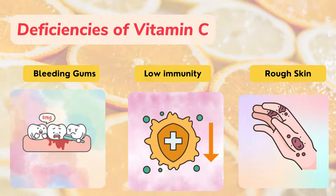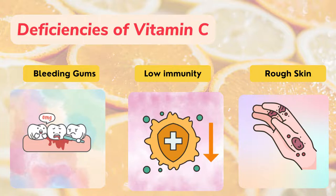Now, what are the deficiencies of vitamin C? The deficiency of vitamin C is basically scurvy. It is a condition which leads to a lot of symptoms like low immunity, bleeding gums, rough skin, fatigue, and tiredness. Scurvy is the name given to the condition which happens with deficiency of vitamin C, and the most common symptom is bleeding of the gums, followed by fatigue and rough skin.